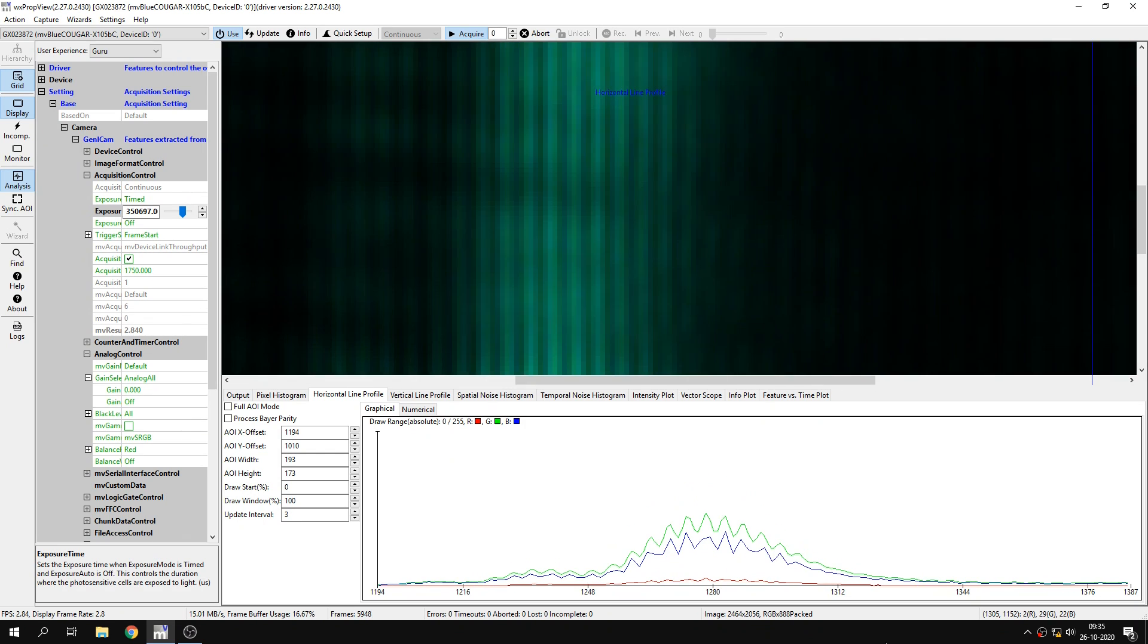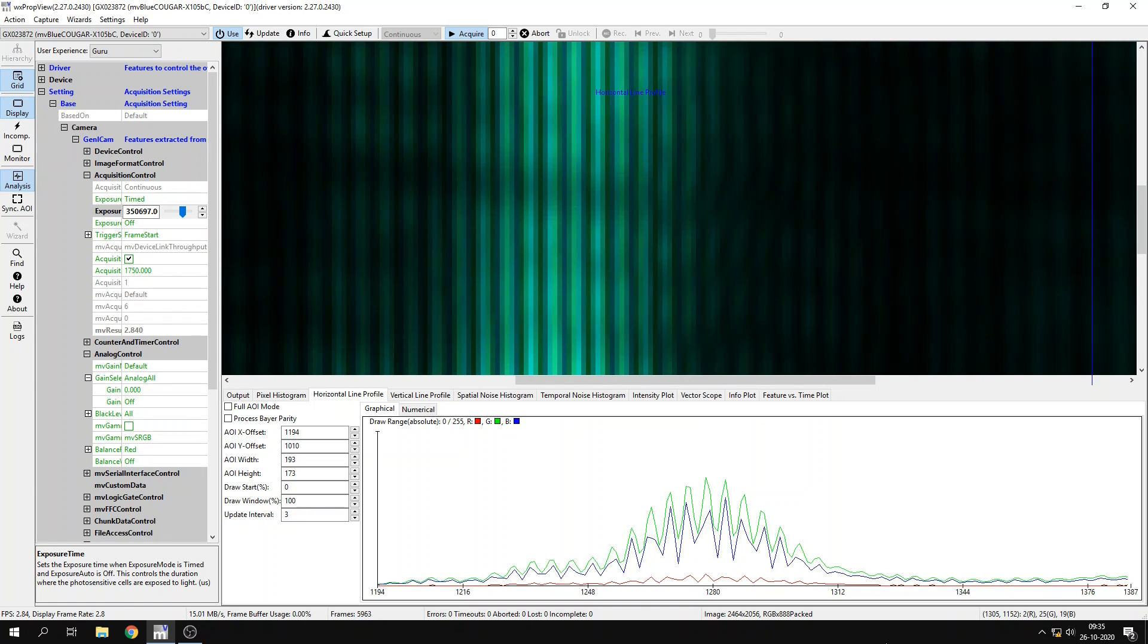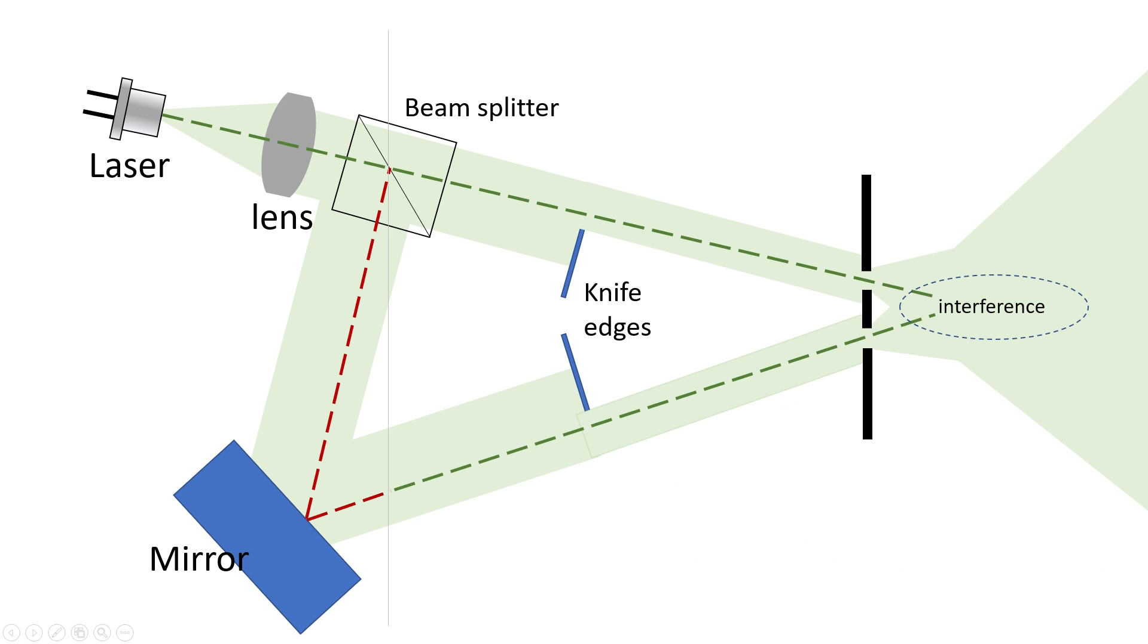But surely, what we observe here cannot be single photon interference, right? After all, one of the paths leading to the area of interference is about 40 mm longer. And how can it be that a single photon somehow splits up into two completely different paths, and still ends up interfering in an area much smaller than the difference in the distance between the two paths?